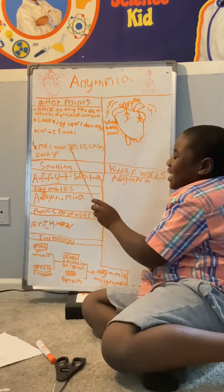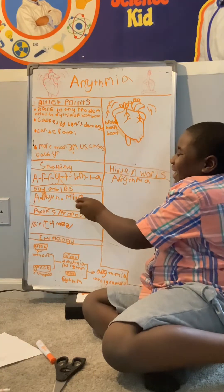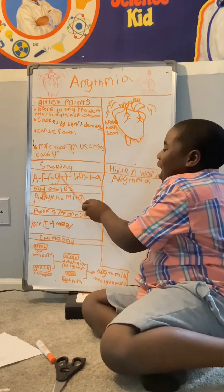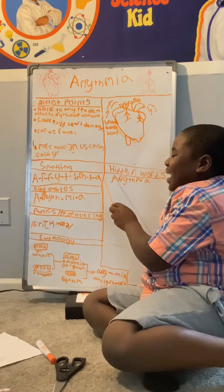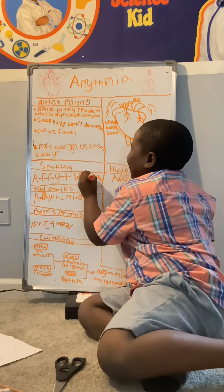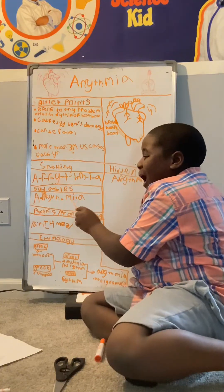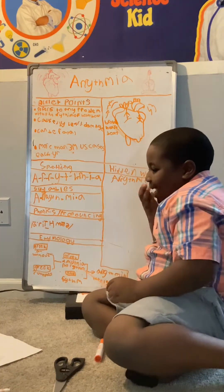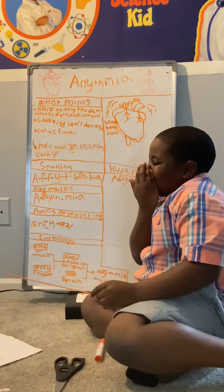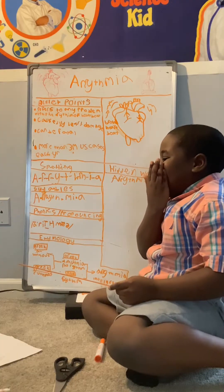Let's start with spelling, syllables, phonics, and etymology. Spelling: A-R-R — make sure the double R — Y-T-H-M-I-A. For my little ones: A-R-R-Y-T-H-M-I-A.